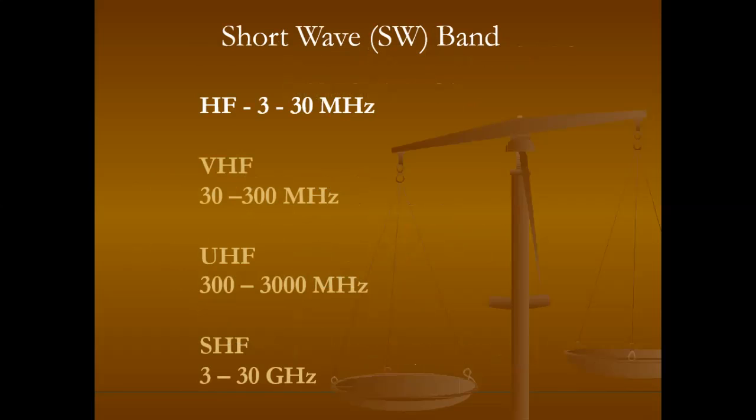Short wave band: HF 3 to 30 MHz. VHF 30 to 300 MHz. UHF 300 to 3000 MHz. Next, SHF — super high frequency. This band is also known as the centimeter band or centimeter wave, as the wavelength ranges from 1 to 10 cm.